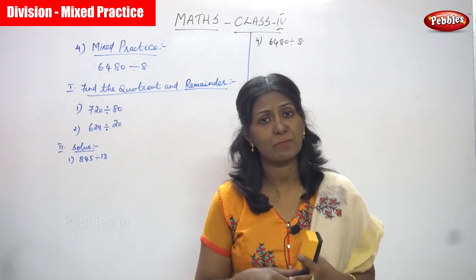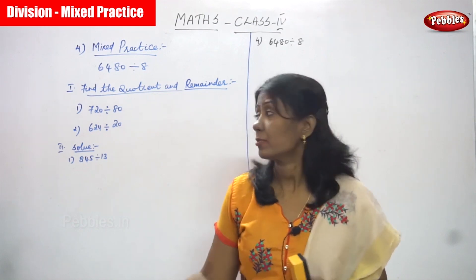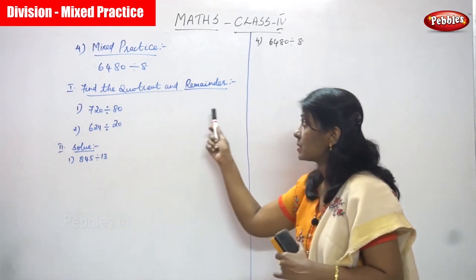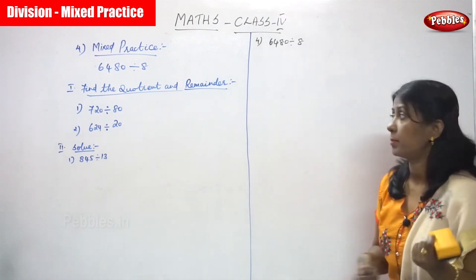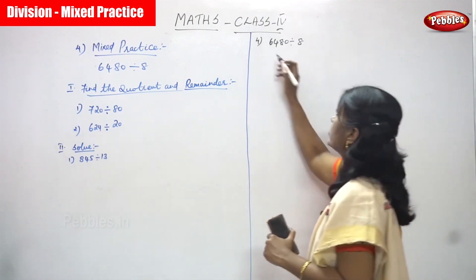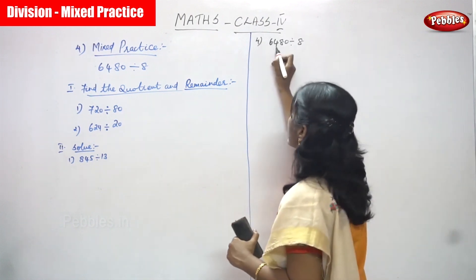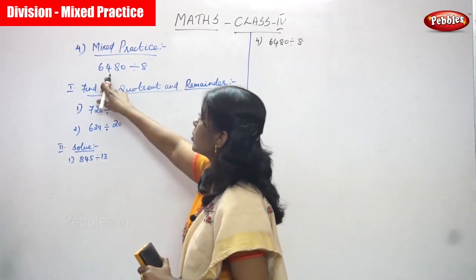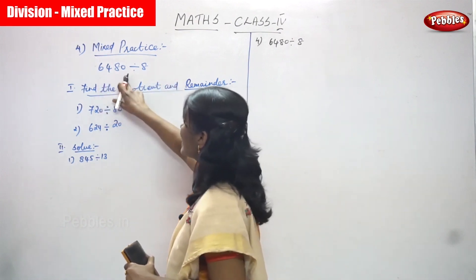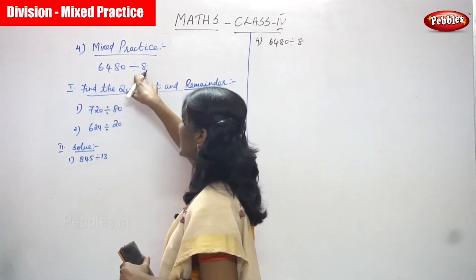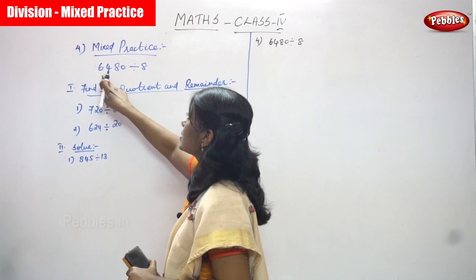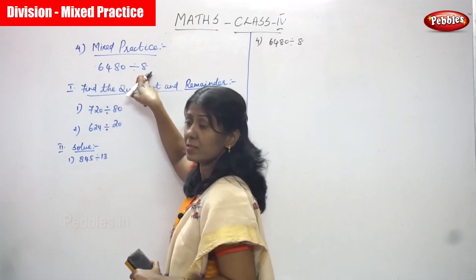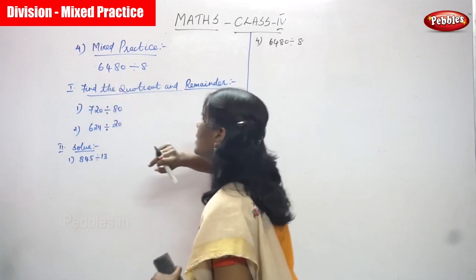Now we are going to practice some sums. The first question is mixed practice. Let's see the sum. We are going to solve the problem. The first question is 6480 divided by 8. I have written the question here. That means here is a 4-digit number and here is a single digit, so we are going to divide.